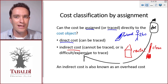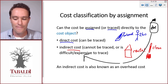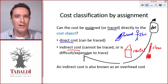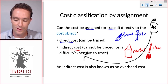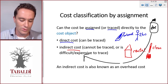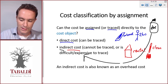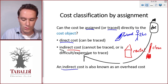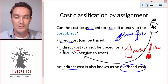The same applies to the nails — we could go and count the nails per table, but sometimes one gets bent and we have to use another, so it's not exactly the same for each table. The benefit of that accuracy doesn't outweigh the cost and effort involved, so we also classify nails as an indirect cost. An indirect cost is also known as an overhead cost — anything that cannot directly be traced to the cost object is called an overhead.